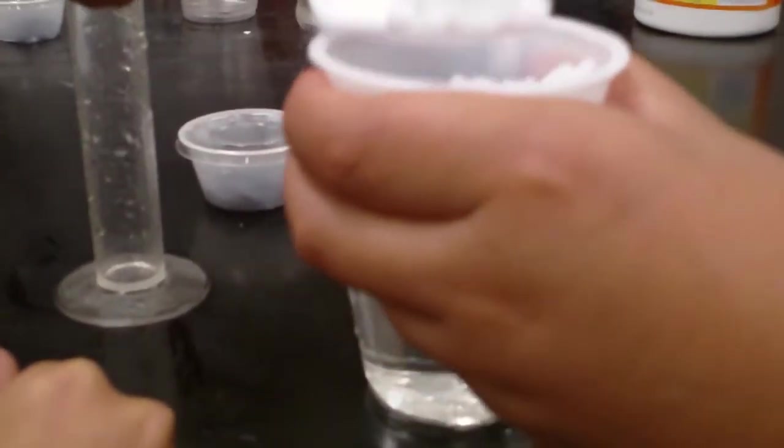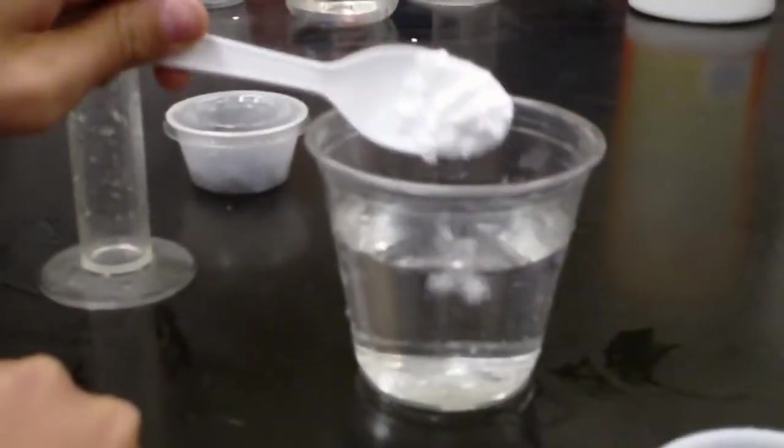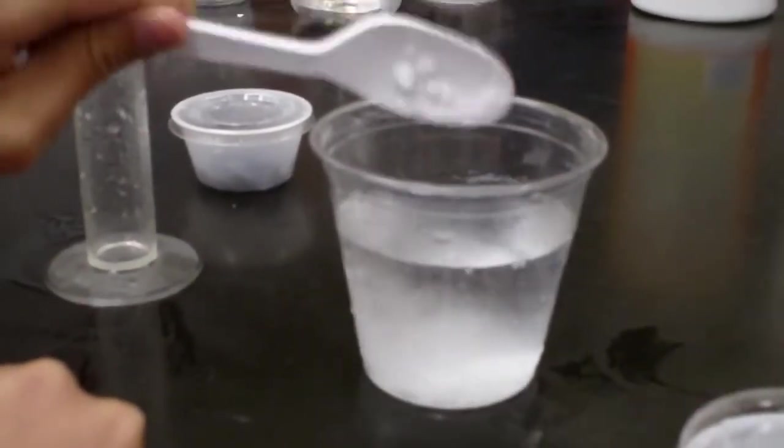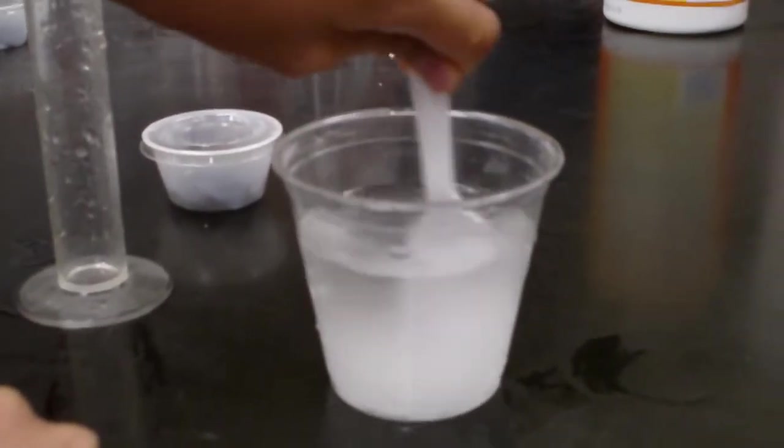Now we're adding some baking soda. We're scooping a teaspoon of it. There's our teaspoon. Okay, we're putting it in the cup. Okay, now we're going to stir it, right? Yeah, it smells like baking soda.